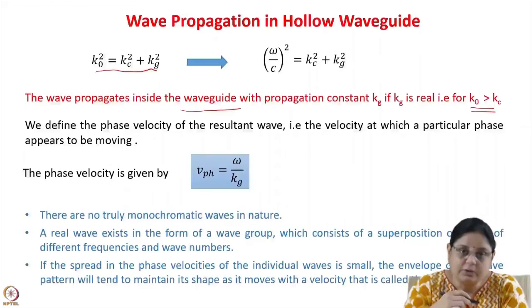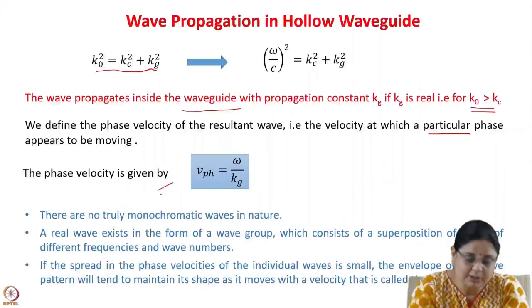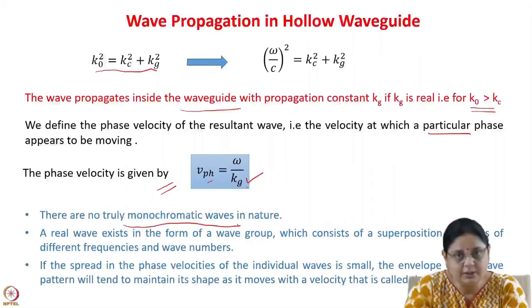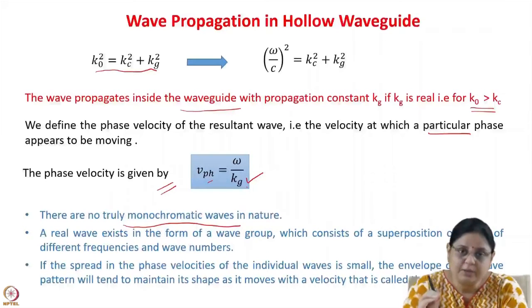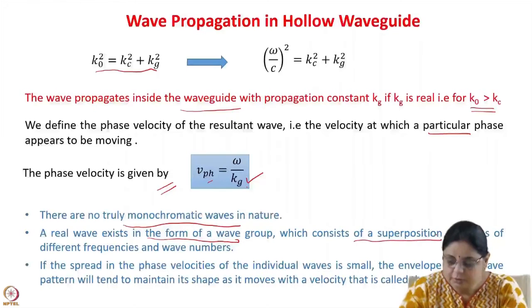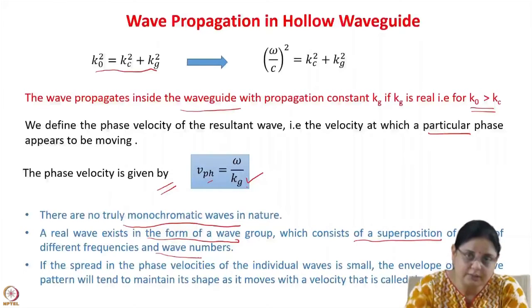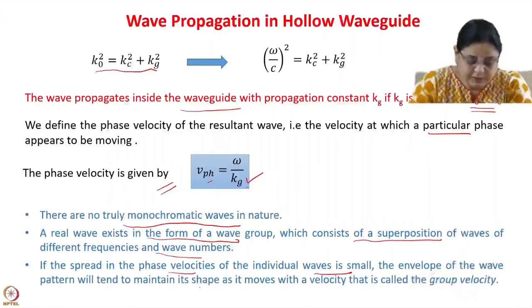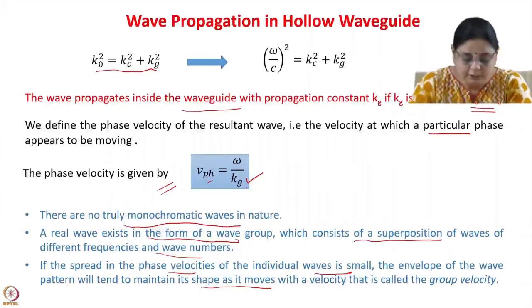Now we define the phase velocity of the resultant wave — the velocity with which a particular phase appears to be moving. The phase velocity is given by V_phase equals omega divided by Kg. In real life there are no truly monochromatic waves in nature; there is some variation in frequency. A real wave exists as a wave group which consists of a superposition of waves of different frequencies and wave numbers. If the spread in phase velocities of individual waves is small, the envelope of the wave pattern will maintain its shape as it moves with a velocity called the group velocity.